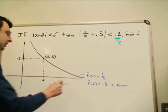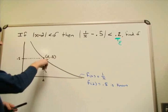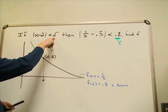When we look at our function here, 1/x, at x equals 2 we know it has a height of 1/2. That's where this |x - 2| < δ is coming from.